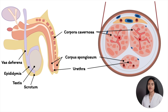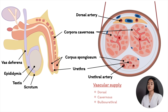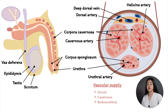Now let's talk about the vascular supply. The common penile artery has three distinct branches: dorsal, cavernous, and bulbar urethral. The dorsal artery supplies blood to the glans of the penis during erection. The bulbar urethral artery supplies the corpus spongiosum and the bulb of the penis. The cavernous artery supplies the corpora cavernosa and branches out into the helicine arteries. And this here is the deep dorsal vein.